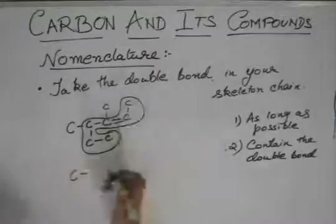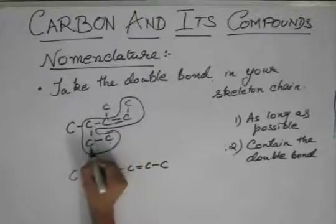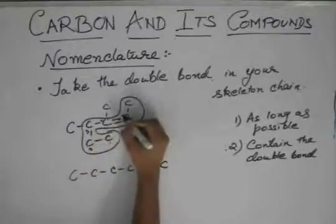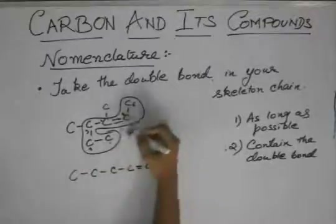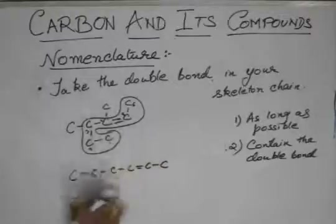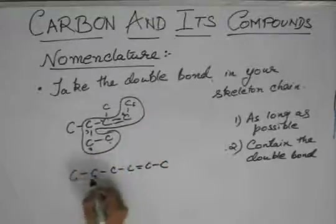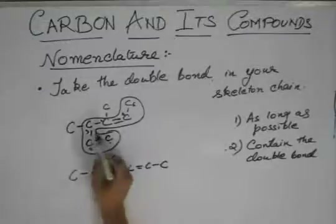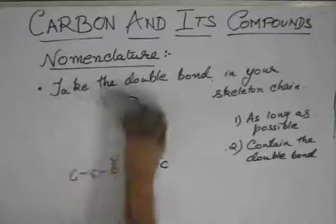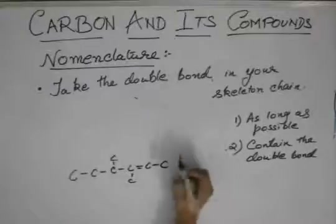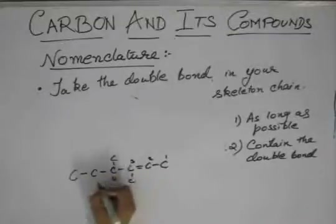We straighten up this chain. While straightening, you can write numbers to track where the groups are present. The numbering should start from the end closer to the double bond. Counting from that end: one, two, three — there is one methyl group at three — four, and another methyl group at four. The numbering starts here because the double bond is closer to this end.